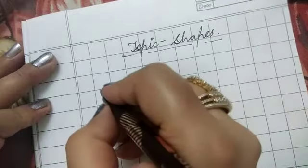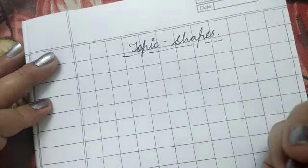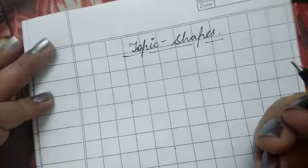What are flat shapes? Or we can say two dimensional shapes.